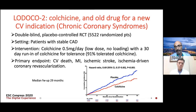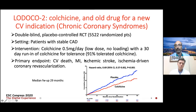The results replicate those of LODOCO1. Importantly, all components of the combined primary endpoint — except mortality — were significant. Colchicine was able to significantly reduce the incidence of myocardial infarction, ischemic stroke, and ischemia-driven coronary revascularization. This is quite impressive and important.